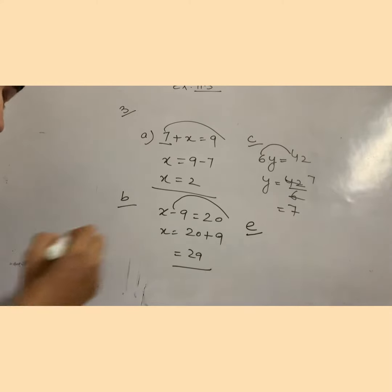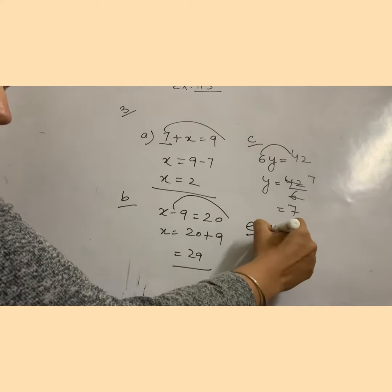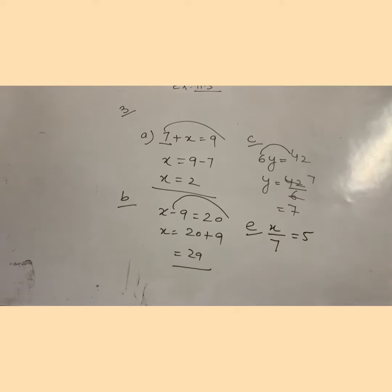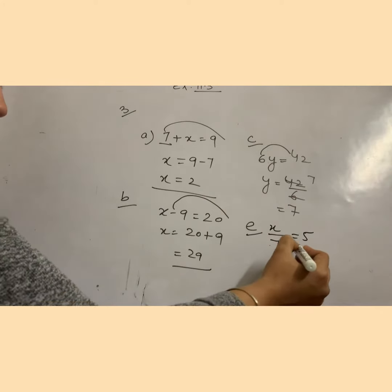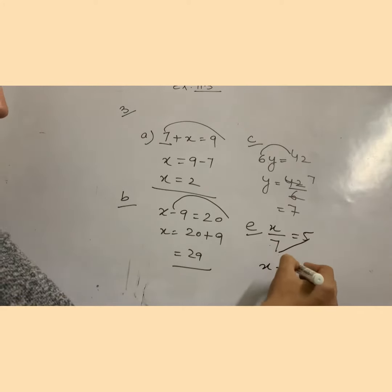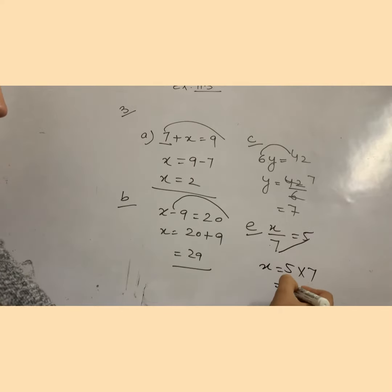Part e: x upon 7 is equal to 5. This 7 will go here and multiply. 35.